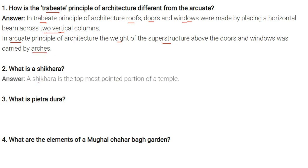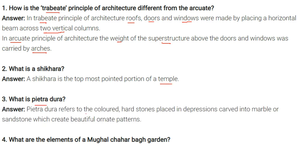Question: What is a Shikara? Shikara is the topmost pointed portion of a temple. Question: What is Pietra Dura? Pietra Dura refers to coloured hard stones placed in depressions carved into marble or sandstone, which create beautiful ornate patterns.